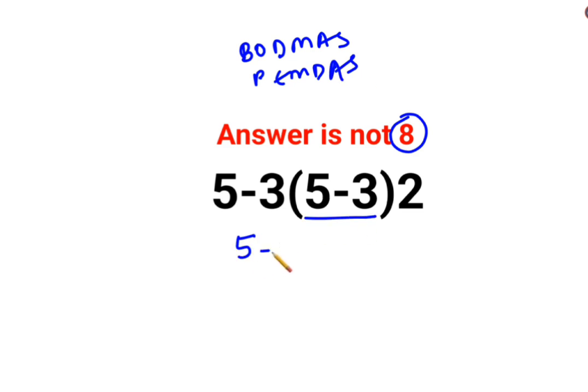We'll keep the rest of the question as it is, and since there is no sign between 3 and the bracket, it means multiplication. 5 minus 3 is 2 multiplied by 2.